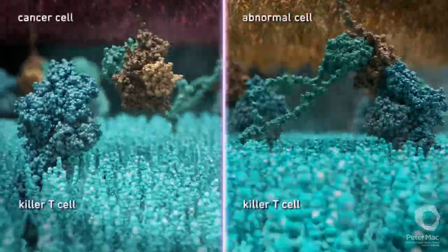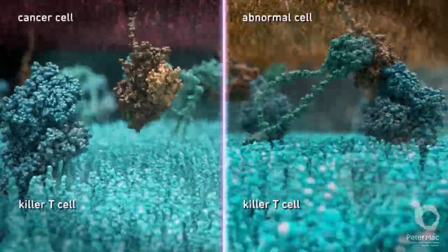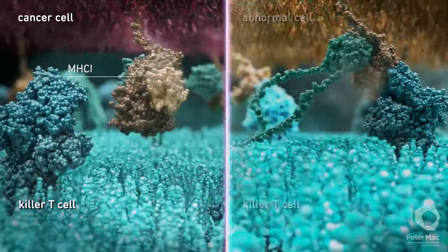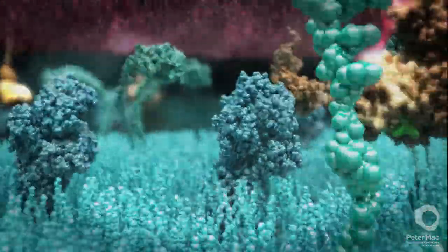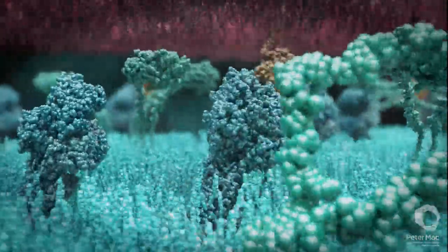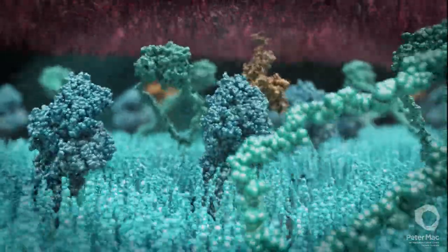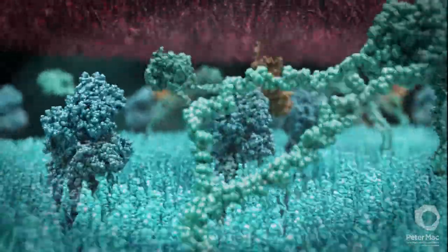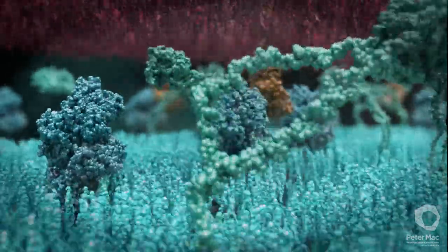On the left we see the surface of a cancer cell. Cancer cells can avoid recognition by reducing the number of MHC1 molecules on their surface that would normally alert killer T cells to them. This means that detection and killing of cancer cells by killer T cells is impaired.